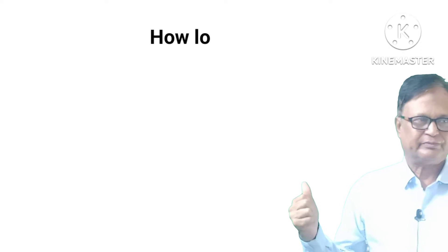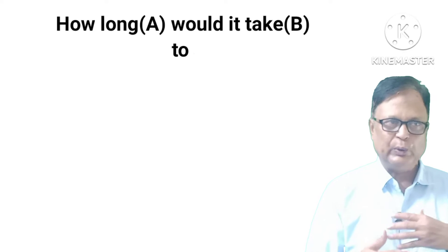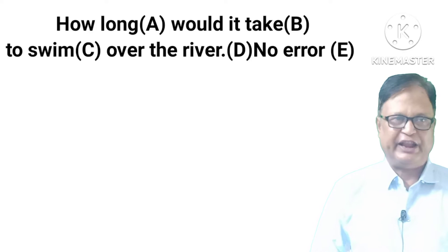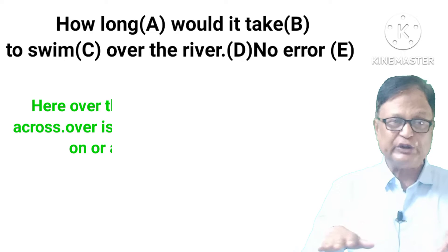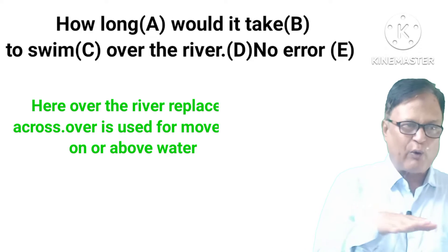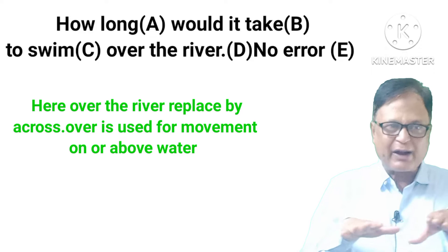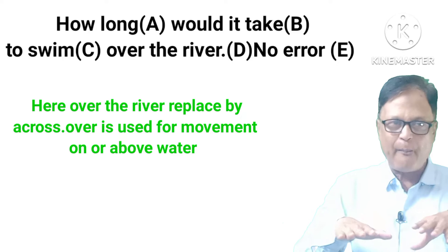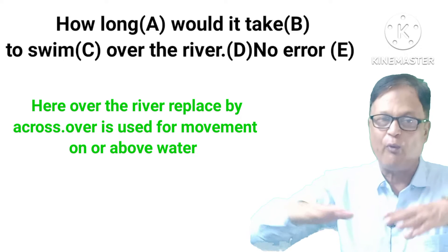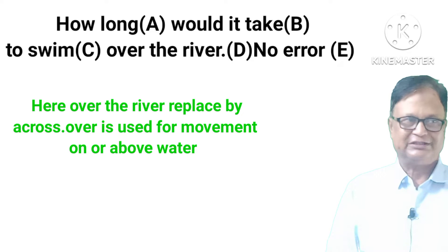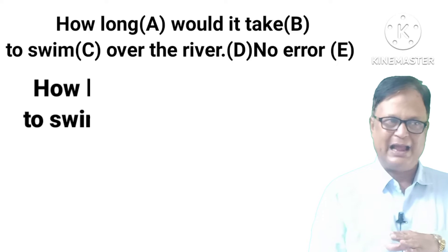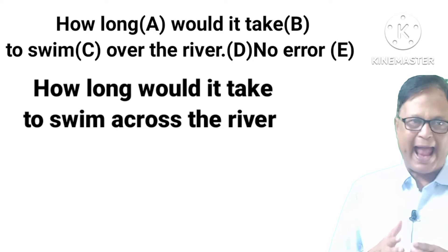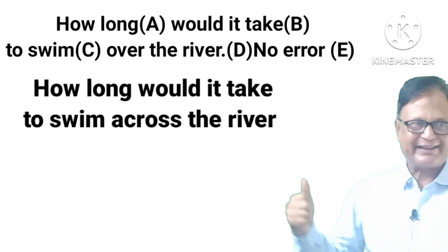Next: 'How long would it take to swim over the river?' Here, replace 'over' with 'across.' 'Over' is used for movement above or on top of water. The corrected sentence is: 'How long would it take to swim across the river?'